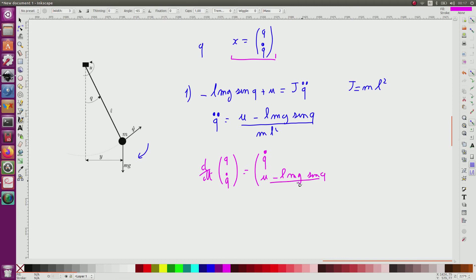Divided by ML squared. Recall that here, I can only have in this expression the state, so Q and Q dot, and U.